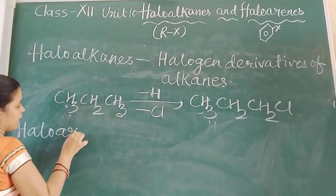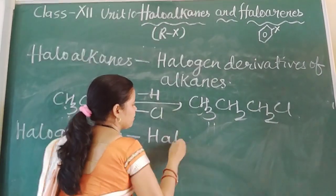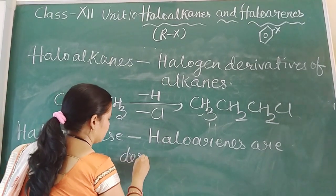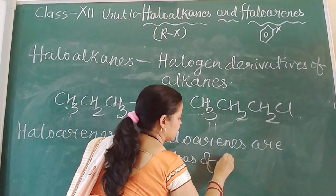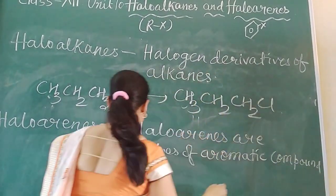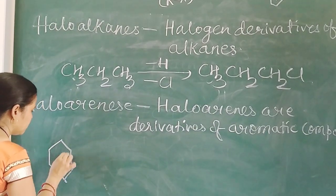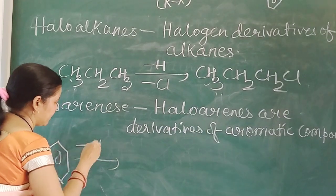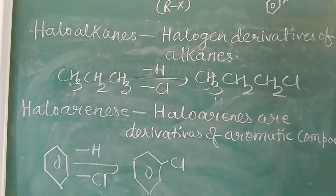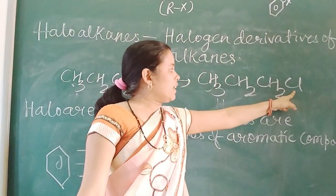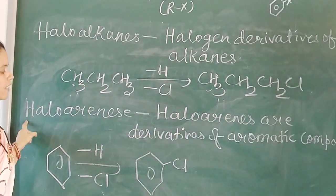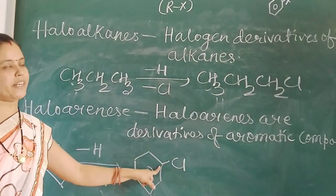Similarly, haloarenes. Haloarenes are the derivatives of aromatic compounds. The simplest aromatic compound is benzene. Haloarenes are formed by the replacement of one hydrogen with one halogen. In haloalkanes, the halogen atom is attached to an SP3 hybridized carbon atom. In haloarenes, the halogen atom is attached to an SP2 hybridized carbon atom.